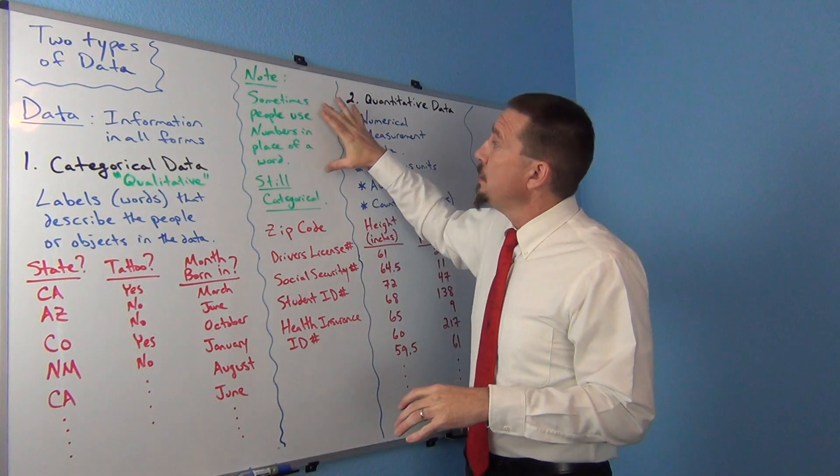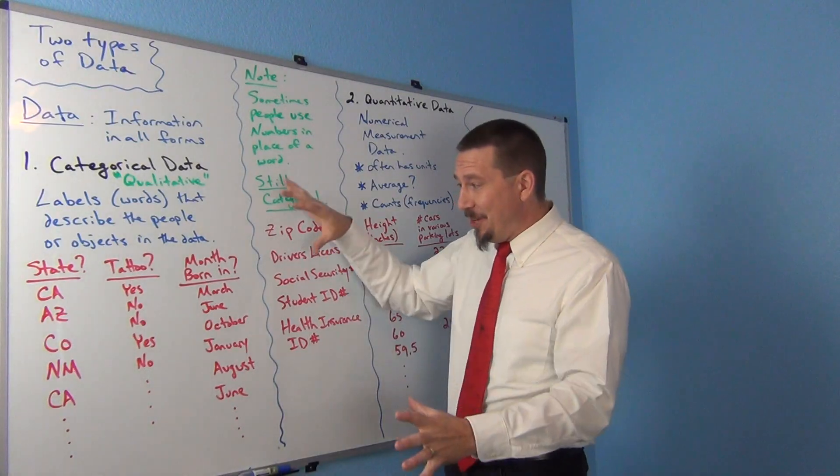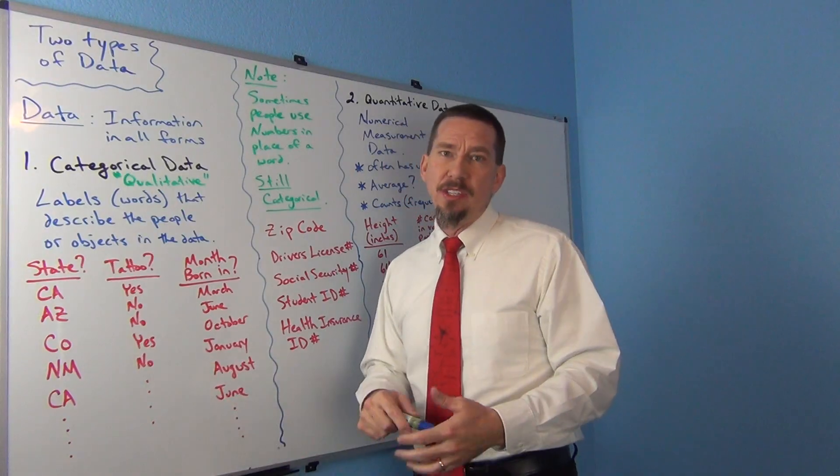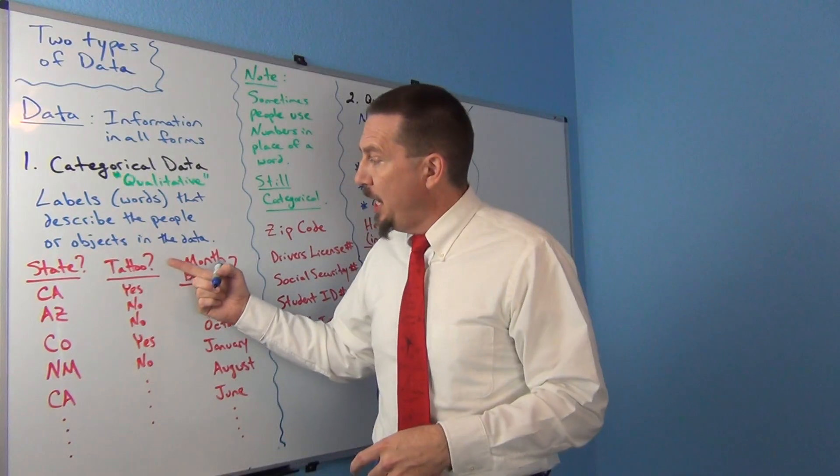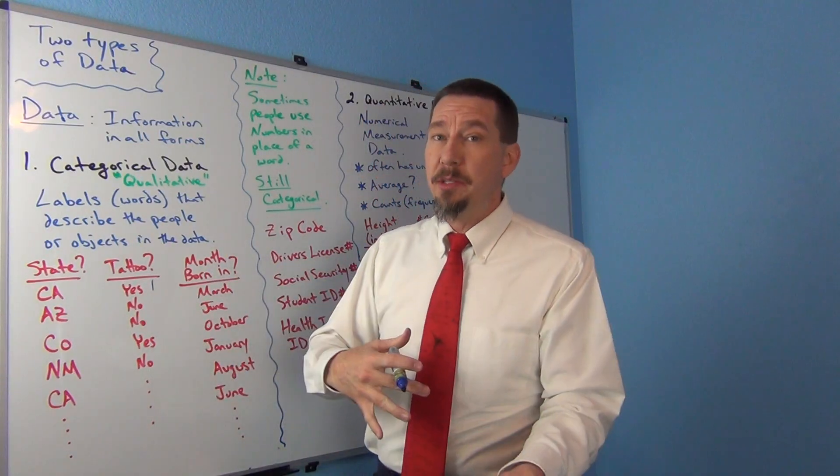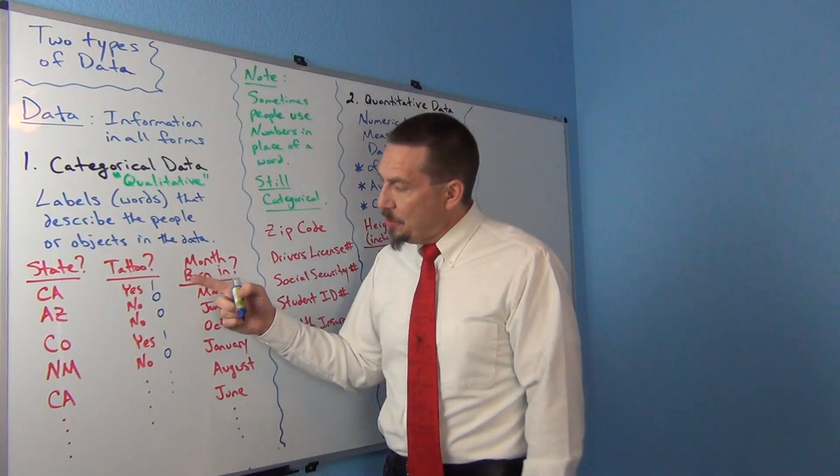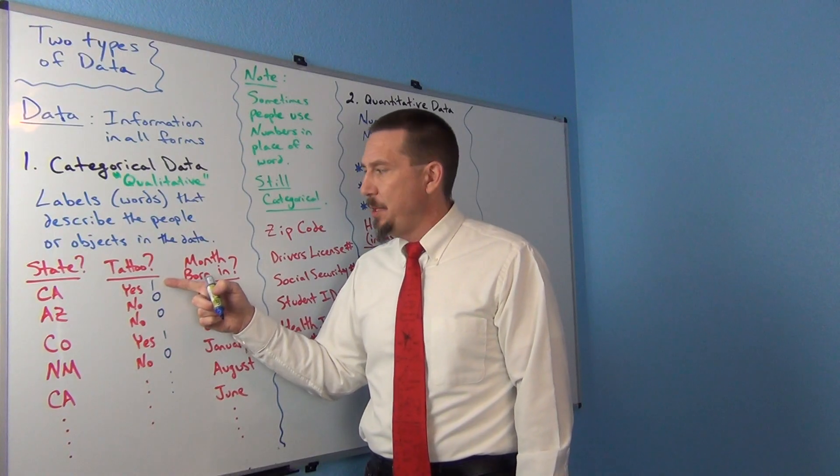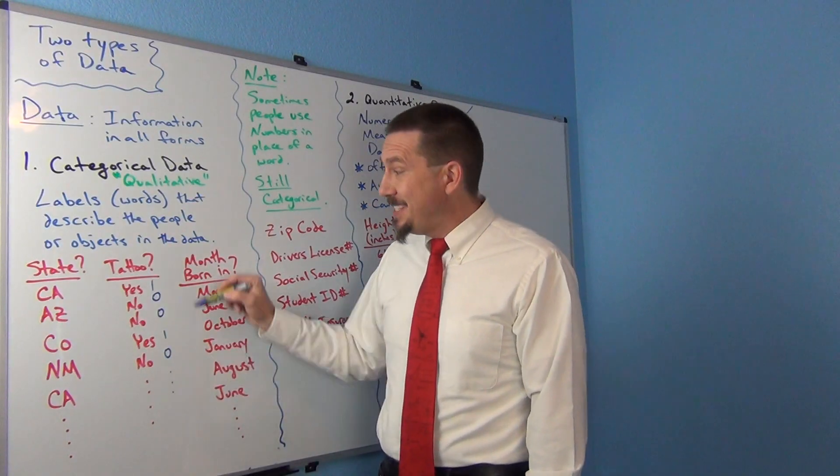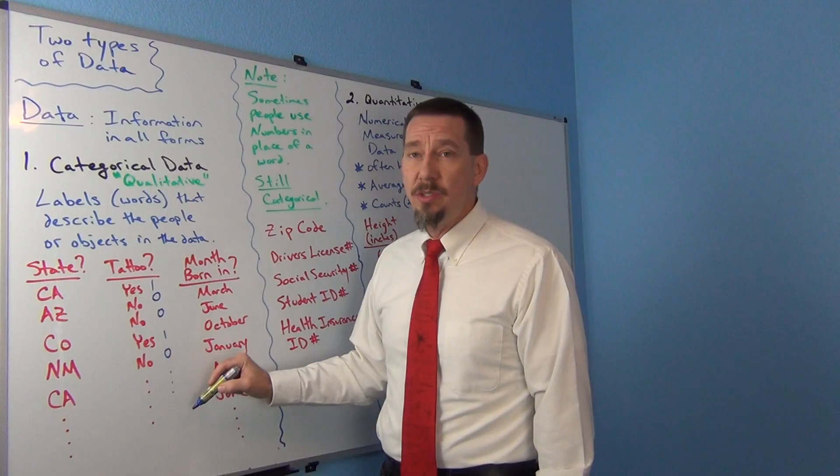As we go through these techniques of how to analyze data, one of the first things I'm going to always refer to is what type of data are we dealing with? So a data set made up of words is categorical data. Now, there is an important note. Sometimes you'll see people use numbers in place of a word. So for example, in yes, no questions, sometimes you'll see people say, like they might refer to a yes, and instead of writing the word yes, they'll write a one. And maybe the no is a two, or sometimes you'll see zero.